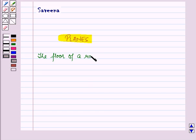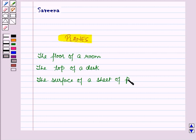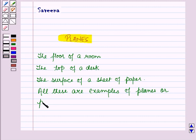The floor of a room, the top of a desk, the surface of a sheet of paper. All these are examples of planes or parts of plane.